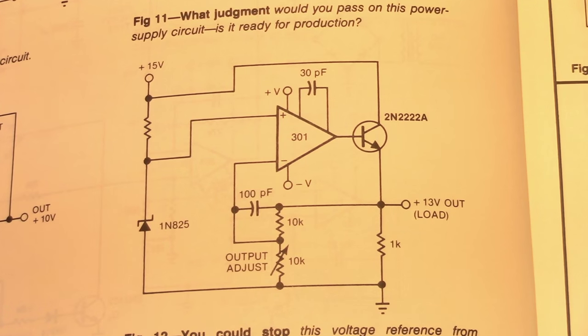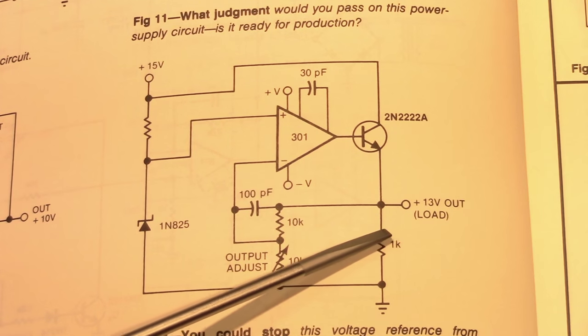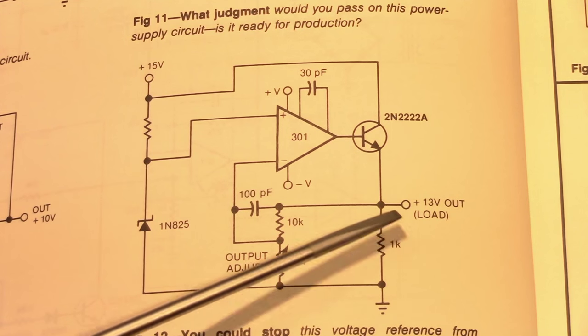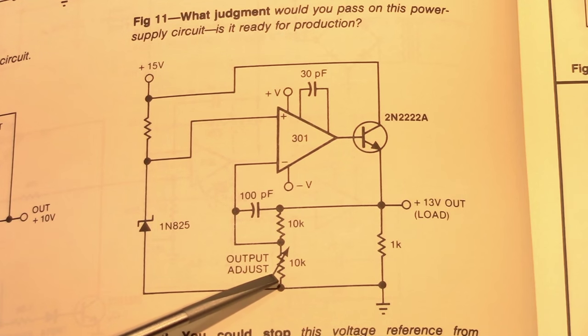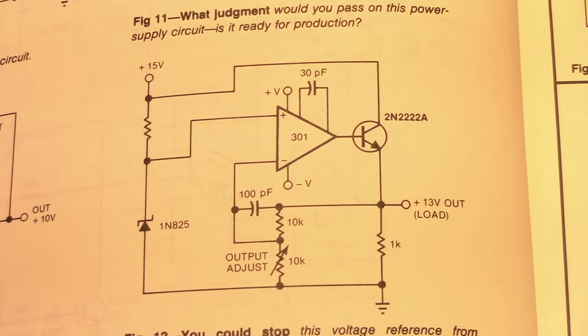So I've got it built up on the breadboard now, and I did a quick couple voltage checks to make sure everything looked like it was working properly. And it does. In fact, it looks like it's working perfectly. I don't see any kind of oscillation here on the output at all. So I'm going to start tweaking this output adjust potentiometer here, see if we can't get this thing to start oscillating on us.